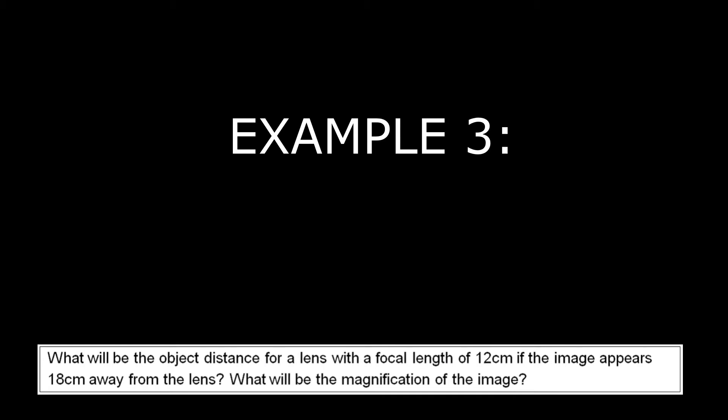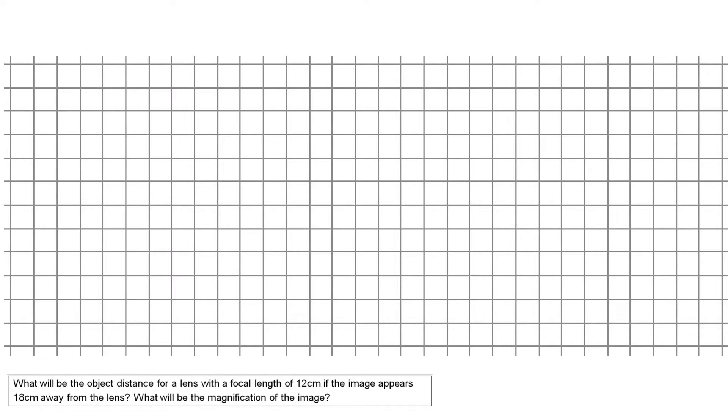Now my last example, I have a lens with a focal length of 12 centimetres producing an image that appears 18 centimetres away from the lens. I want to work out the object distance for that image. And I want to work out what the magnification of the image will be. In other words, how big or small is it compared to the original object? So as always, start off by drawing in your principal axis and your optical axis.